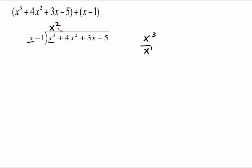Another way to look at this, rather than doing this division, is think about what times x will give me x cubed — it would have to be x squared. So some people like to think of it that way. x squared times this will be x cubed minus x squared, because we've got to multiply that times the whole divisor.